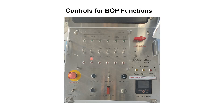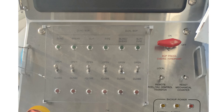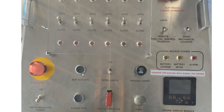Next is the controls for BOP functions. Here is a magnified view. We have the provision to install two BOPs: the first is the Quad BOP and the second is the Dual Combi BOP. For the Quad BOP we have four separate rams, so there are four open-close knobs — for blind, shear, slip, and pipe. When the knob is towards open there will be a green light, and when towards close there will be a red light. Then we have levers for the Dual Combi BOP — blind shear and slip pipe. Here is the BOP activation button to activate the BOP.